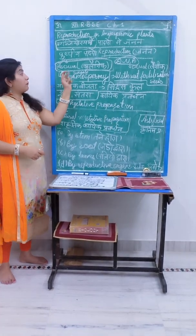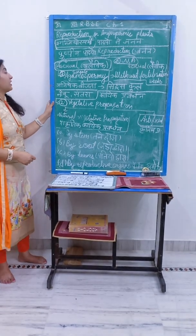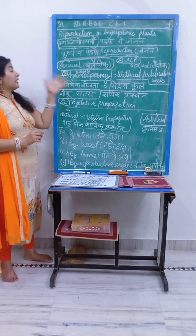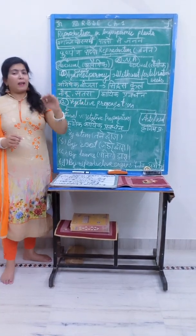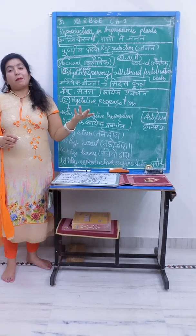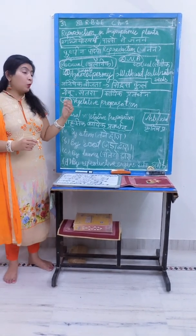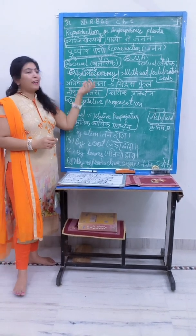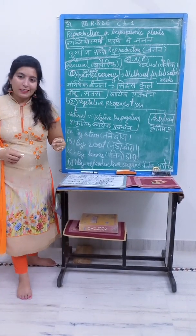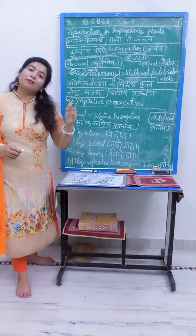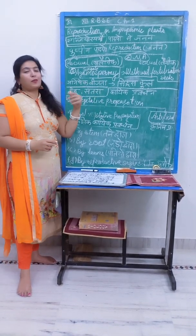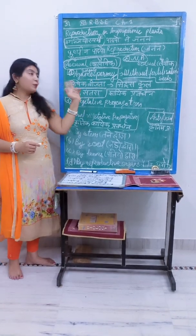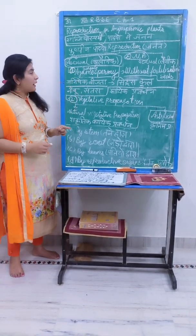In asexual reproduction, a single parent cell participates. A lot of people ask me: why do we call the resulting cell a daughter cell or mother cell? Basically, because it is reproduction — that is why we use the mother or female word. That is why we say single parent cell participates.